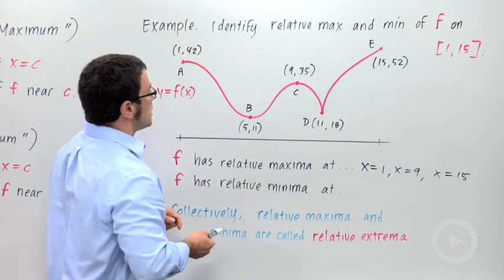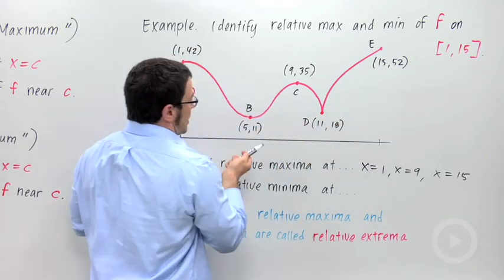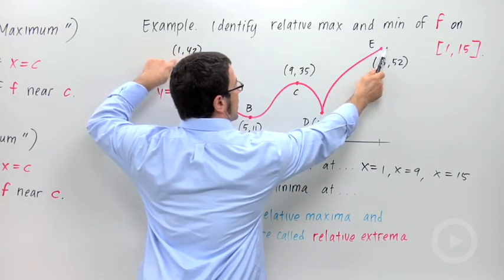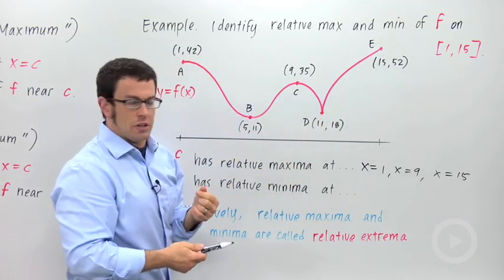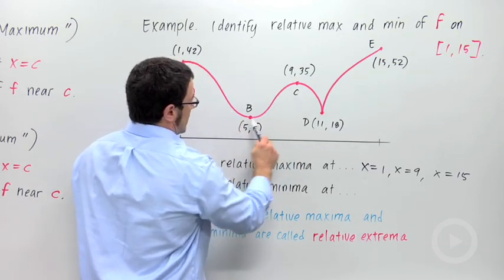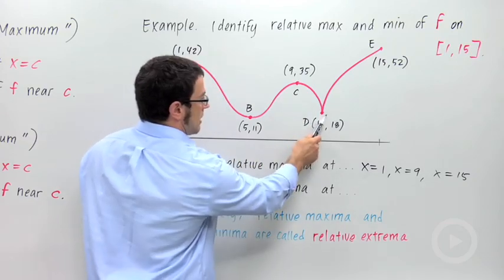Now, what about the relative minima? Well, it looks like these two. And I want you to pay close attention to the fact that a lot of these, first of all, two relative maxima occurred at endpoints. Endpoints are important to check. But also, relative maxima and minima don't need to look curvy. You can actually have a pointy minimum or maximum. So this counts as a minimum.